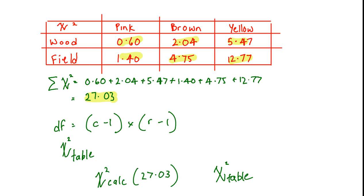And then we need degrees of freedom. So that's columns minus 1, 3 minus 1, times rows minus 1 gives us degrees of freedom equal to 2. Our chi-squared table value is 5.99. Calculated value is greater than table value. So reject the null hypothesis.